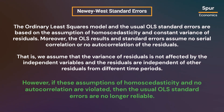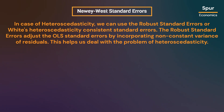However, if these assumptions of homoscedasticity and no autocorrelation are violated, then the usual OLS standard errors are no longer reliable. In case of heteroscedasticity, we can use the robust standard errors or White's heteroscedasticity-consistent standard errors. The robust standard errors adjust the OLS standard errors by incorporating non-constant variance of residuals, which helps us deal with the problem of heteroscedasticity.